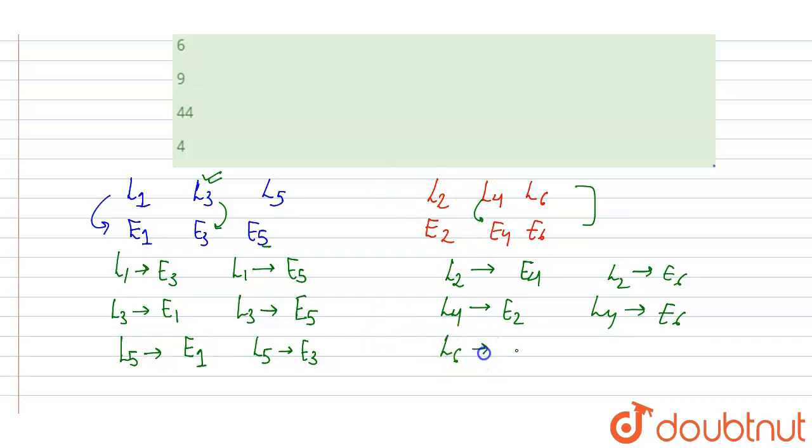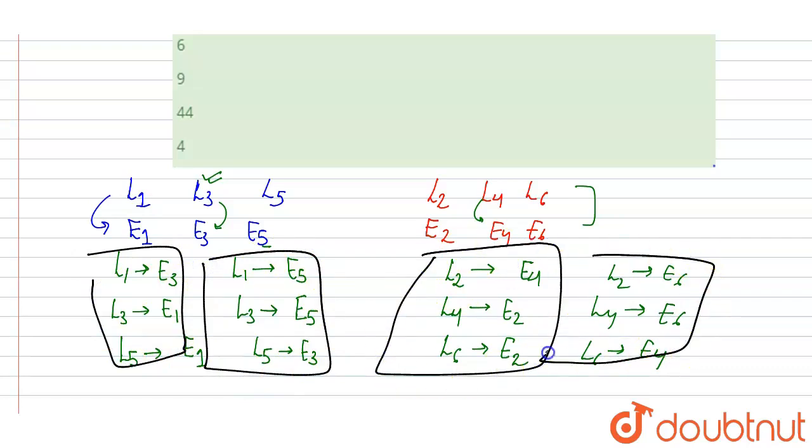Now with L6, L6 will either go in envelope 4. So there are one, two, three, four. So how many ways are there? There are four ways.